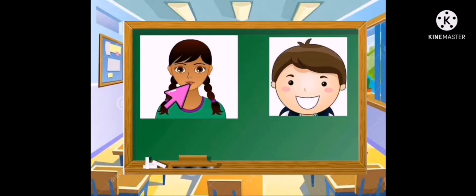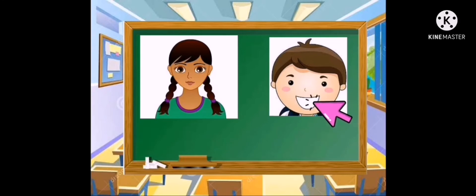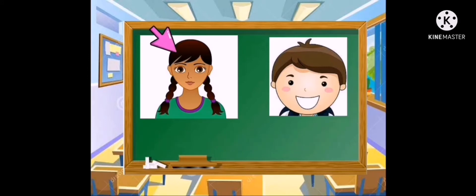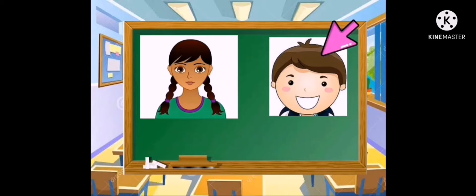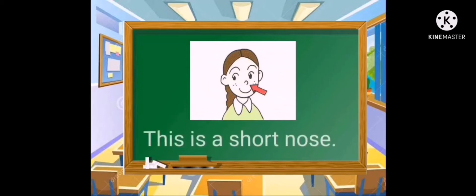First, what is this? Very good, this is a small mouth. Next, what is this? Well done, children, this is a big mouth. Next, what is this? Well done, this is long hair. Next, what is this? Very good, this is short hair. Next, what is this? Well done, this is a short nose.